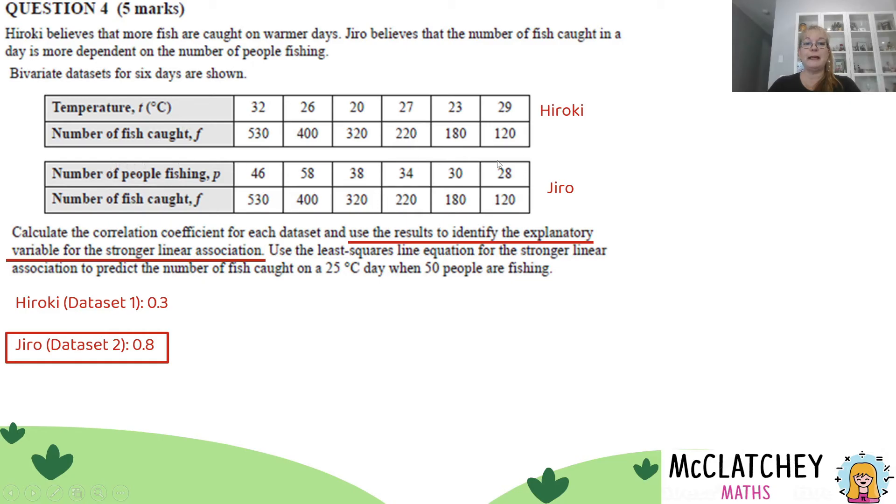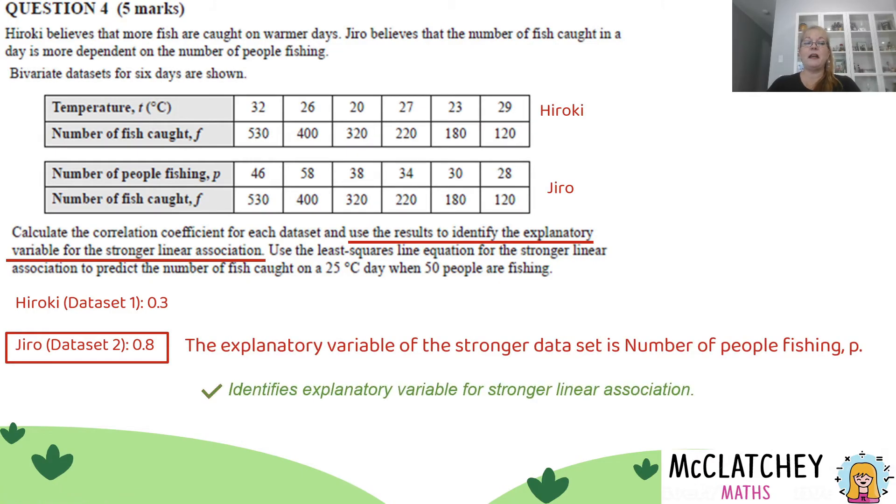Which one explains the other one? Remember, explanatory is your X coordinates. That's the first row there. It's going to be the number of people fishing, P. So because I've identified that now, I'm going to get my second mark.